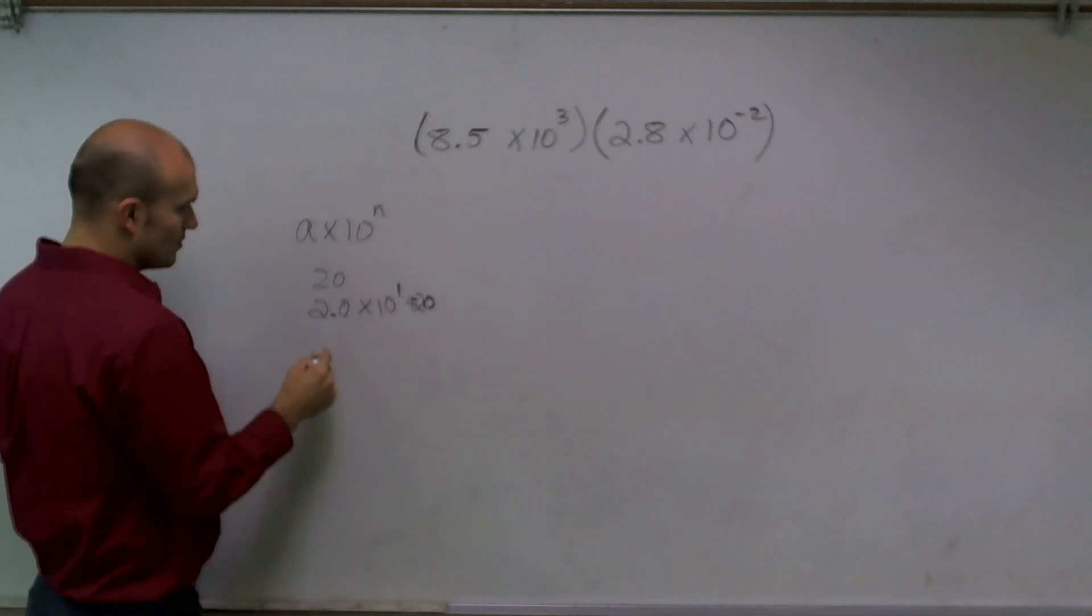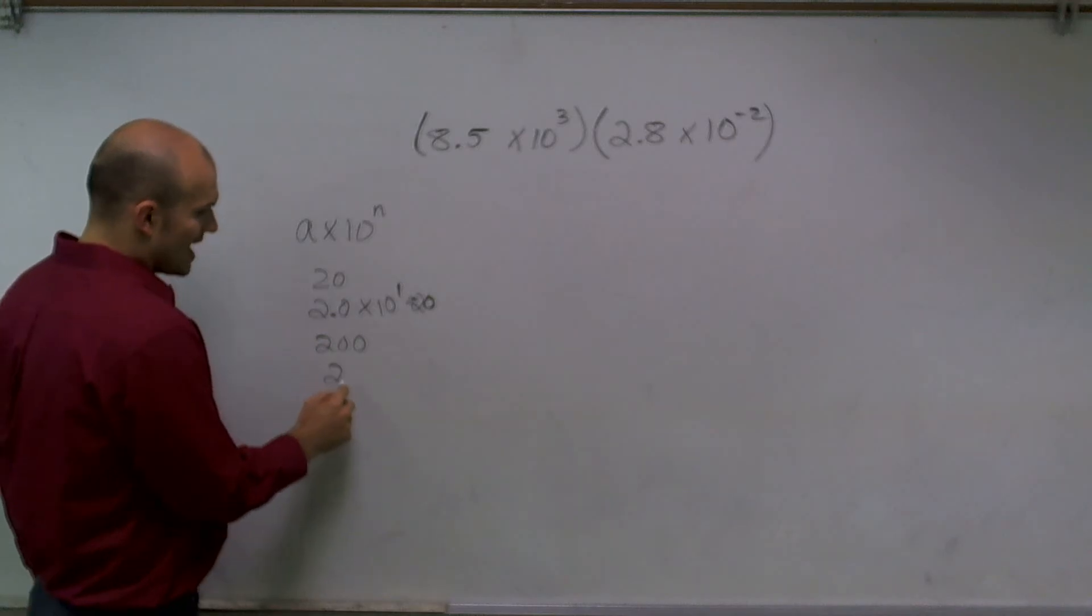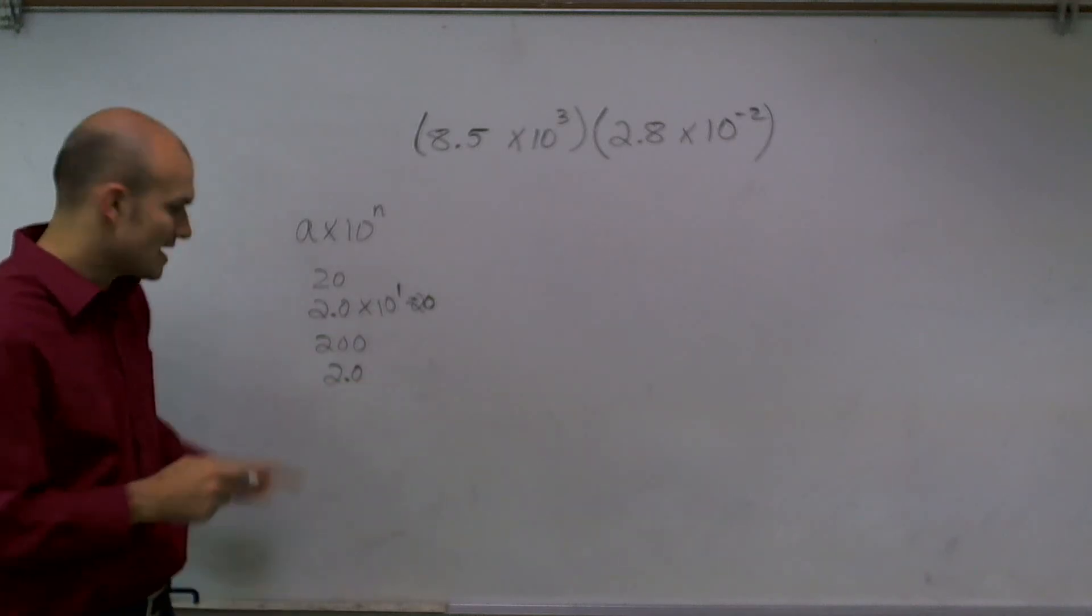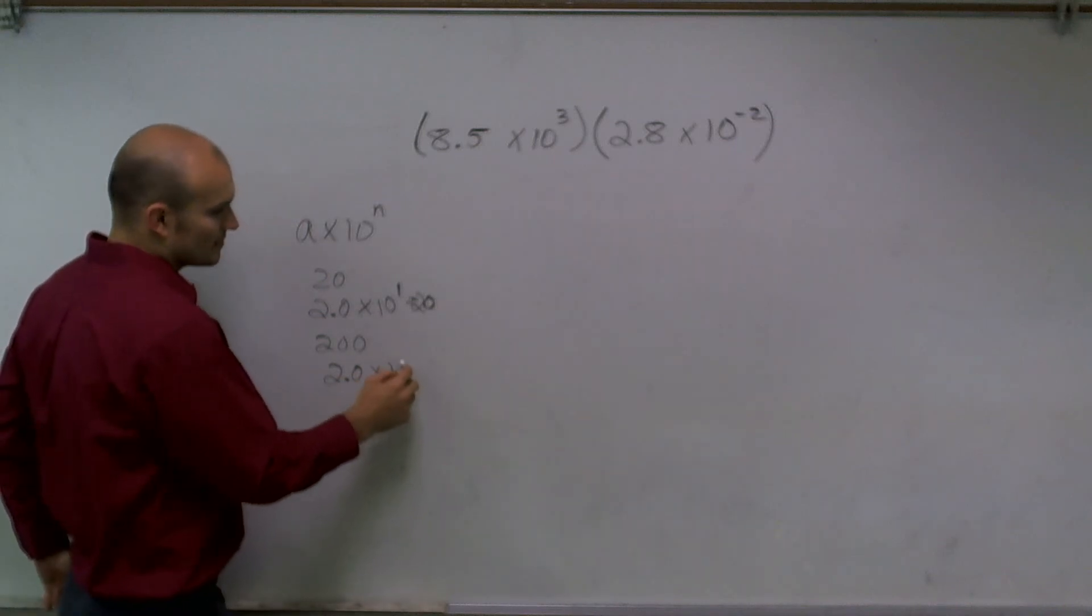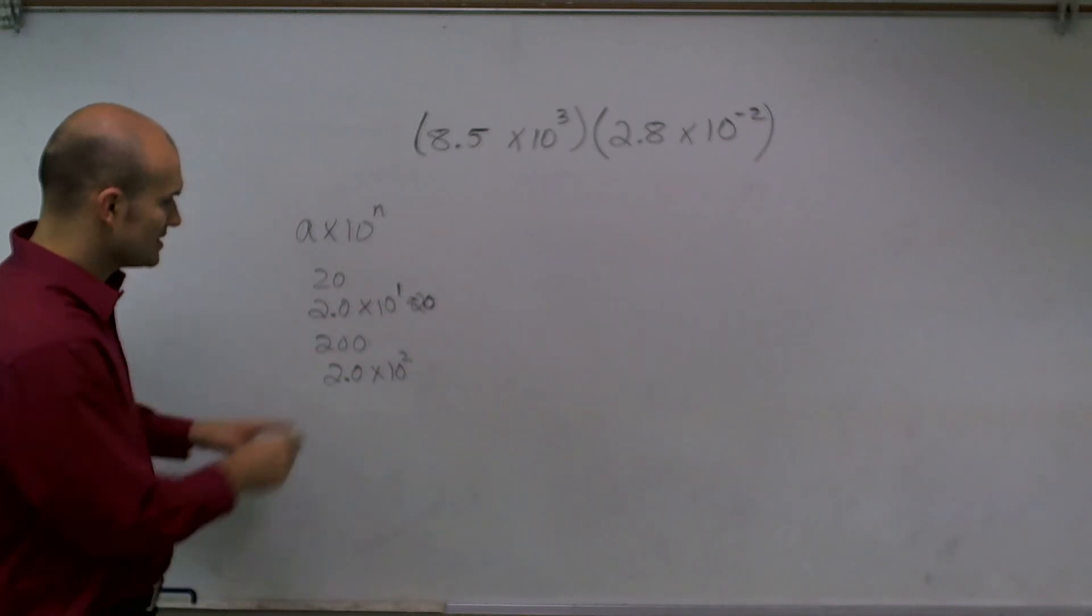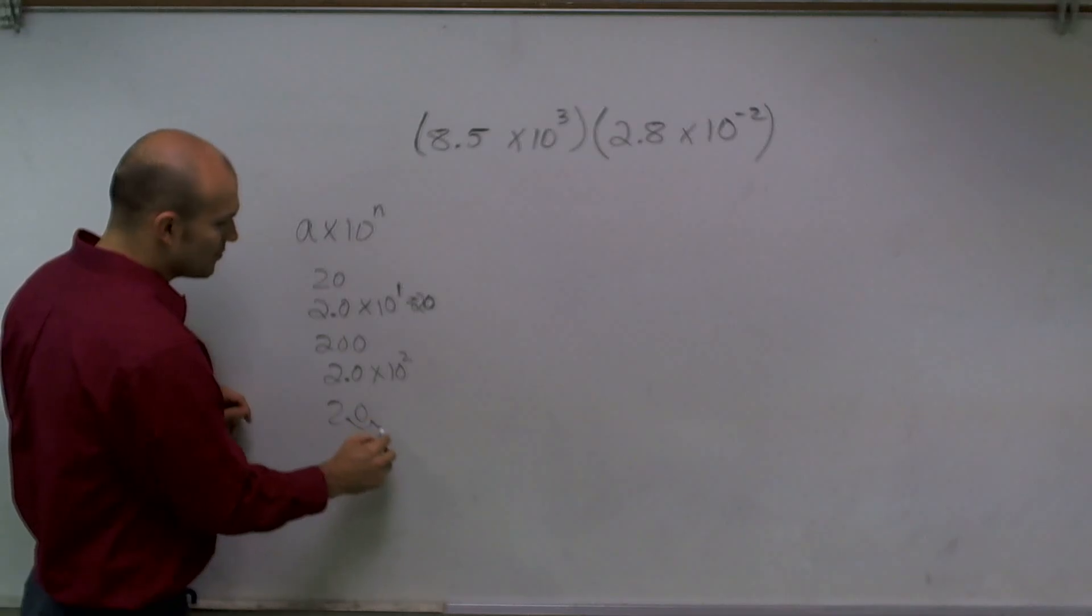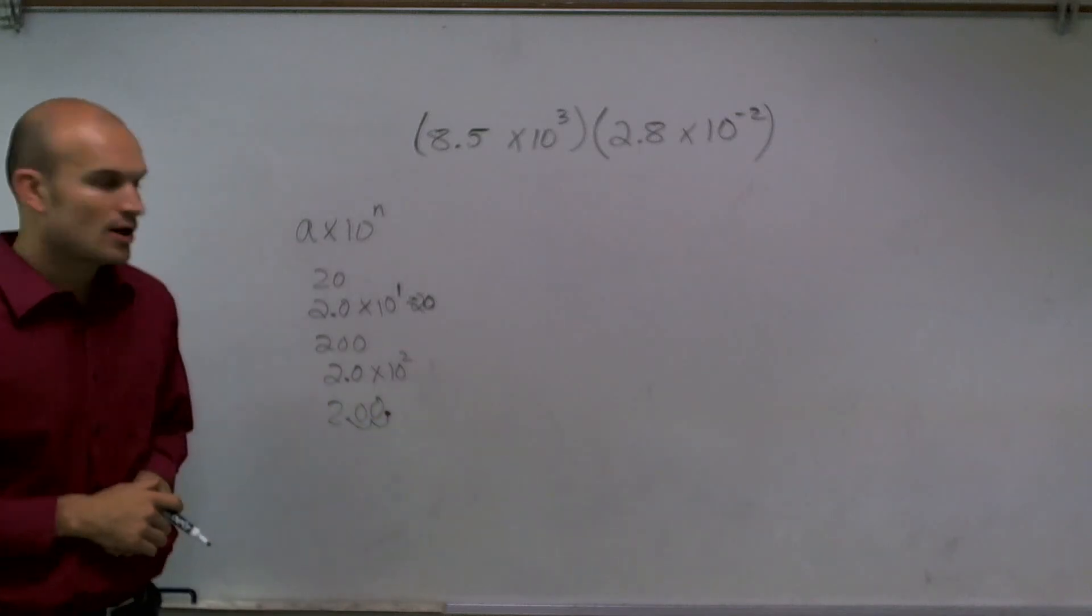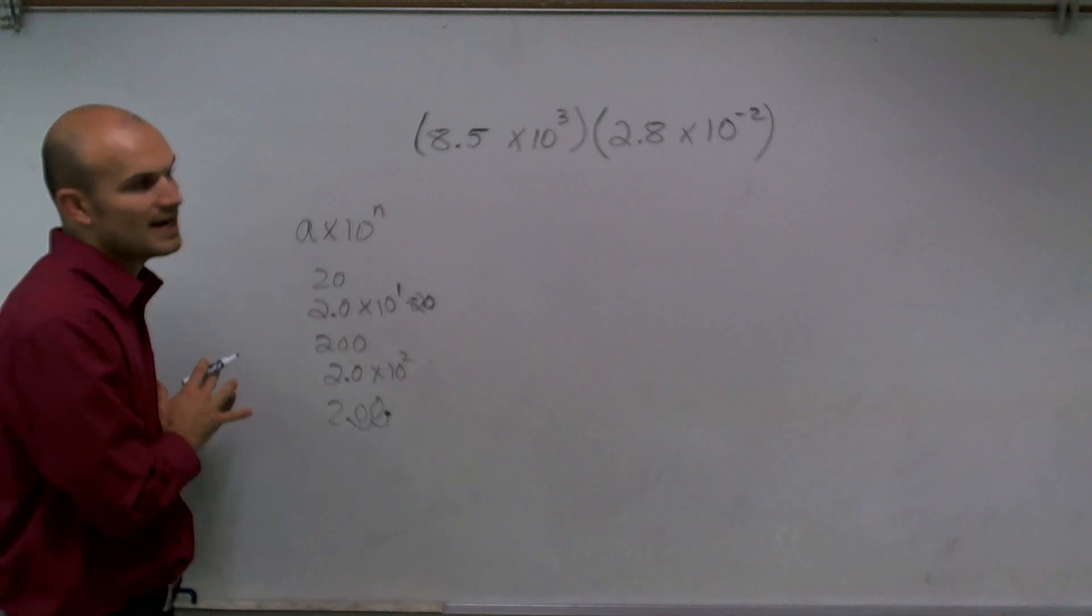If I wanted to write 200, I still have to write 2.0 because a has to be between 1 and 10. Now I'm writing 10 to the second power. For me to get 200, I'll have to move my decimal point over 2 units, and that will give me 200. It's going to work the exact same way if we have negative exponents as well.